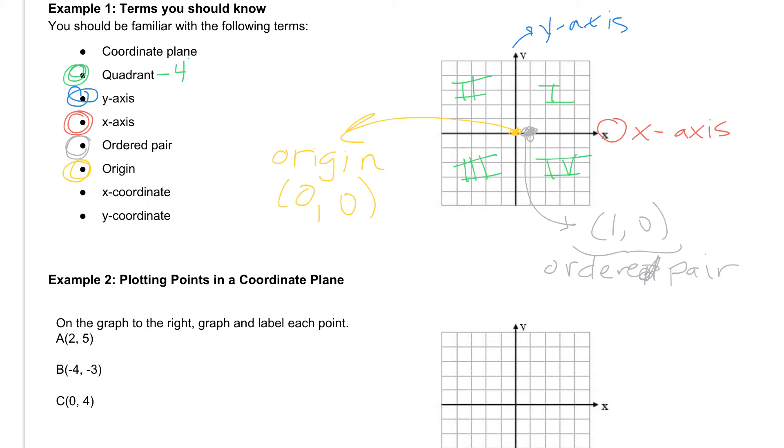Then if we talk about x-coordinates and y-coordinates, the x-coordinate is the very first number in each ordered pair. So this is called the x-coordinate. In this ordered pair, the 1 would be the x-coordinate. It's always the first one.